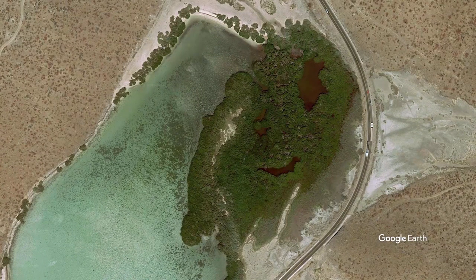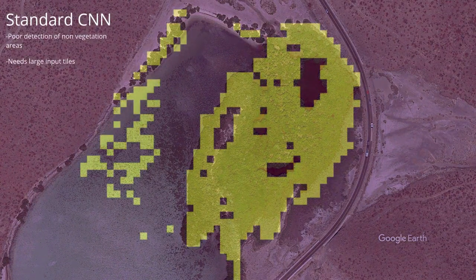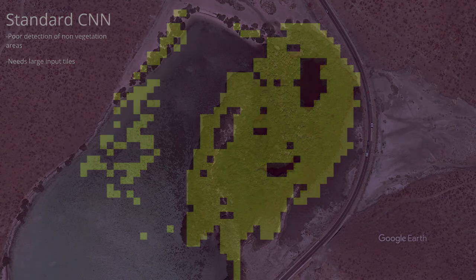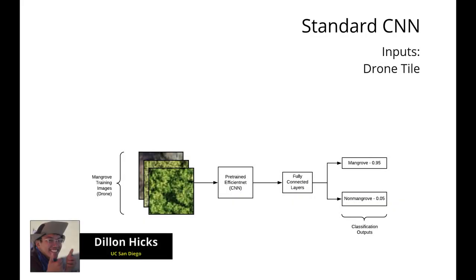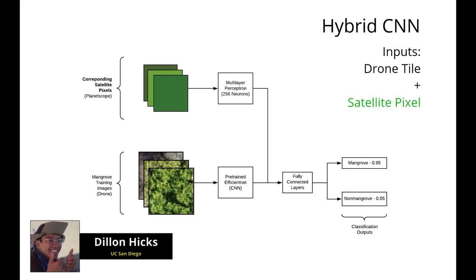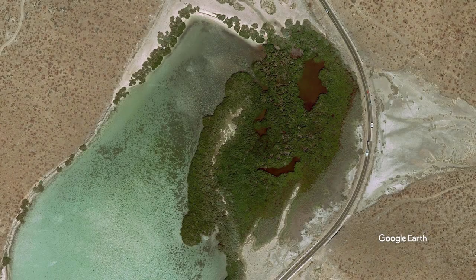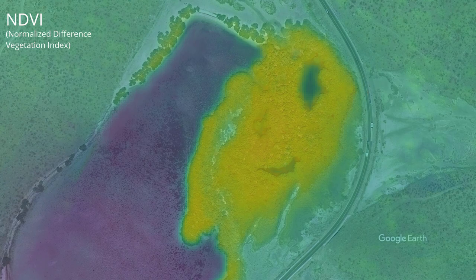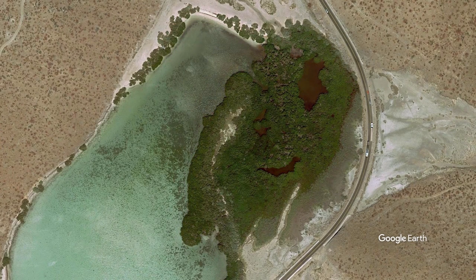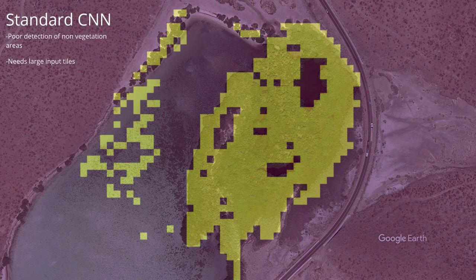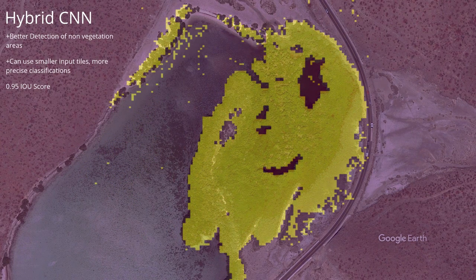In addition, we also aim to augment our original CNN algorithm to use other forms of data to make our models more generalizable to different regions. I, Dylan Hicks, developed a novel hybrid CNN architecture which fuses drone imagery with Planetscope satellite pixels. With this hybrid CNN, generated features from satellites, such as vegetation indices, can be incorporated along with original pixel values to help detect non-vegetation areas, resulting in more precise and accurate mangrove classifications when compared to other methods.